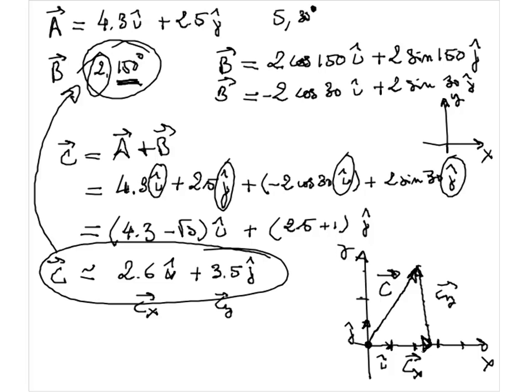From this point, we can re-express this vector from component notation back into magnitude-and-direction form. We can extract the magnitude and the direction from the two components using the Pythagorean theorem. If you're looking for the length of the hypotenuse, take CX squared plus CY squared and take the square root. The magnitude of C — which is always positive — is the square root of CX squared plus CY squared. That will give you the magnitude of C.